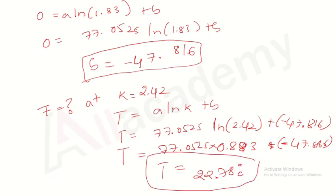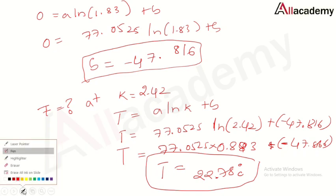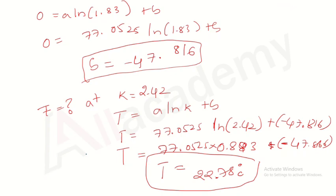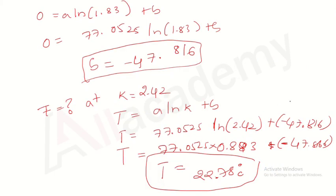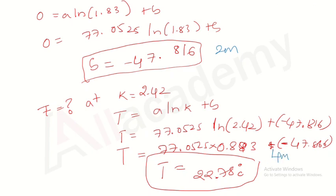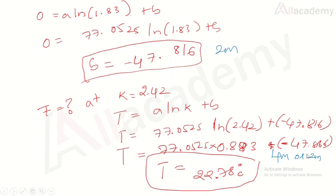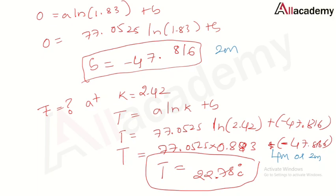This is our final answer. For marks distribution on this eight-mark question: two marks for identifying constant a, two marks for identifying constant b, and four marks for identifying the temperature. If asked for six marks, the distribution adjusts accordingly.